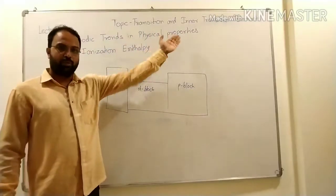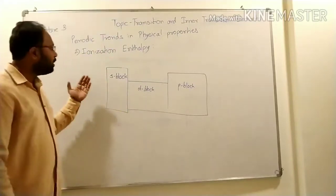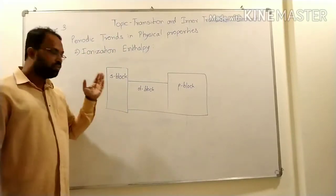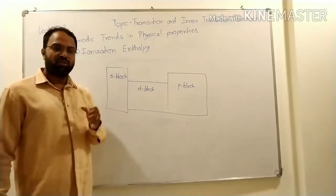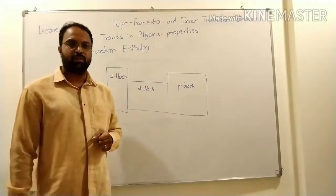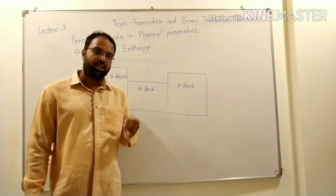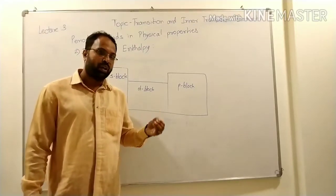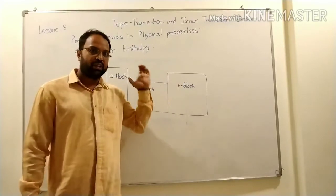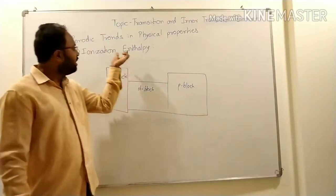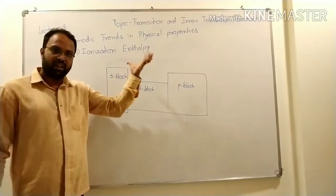Periodic trends in physical properties. First, we studied atomic and ionic radii. Now we see the second property: ionization enthalpy. The ionization enthalpy is the amount of energy required to remove the last electron from its atom. That energy is called ionization enthalpy or ionization energy.